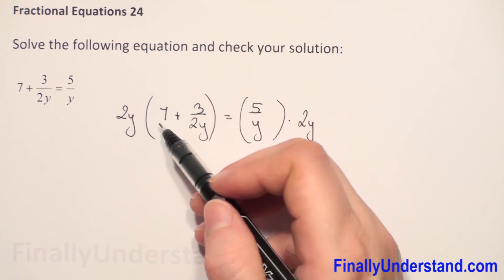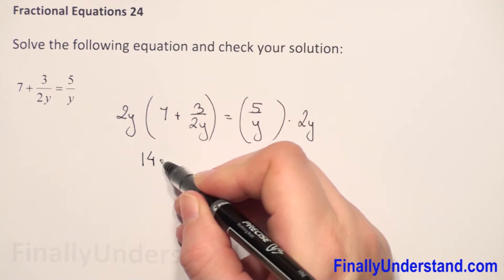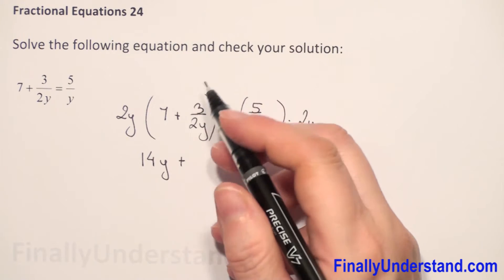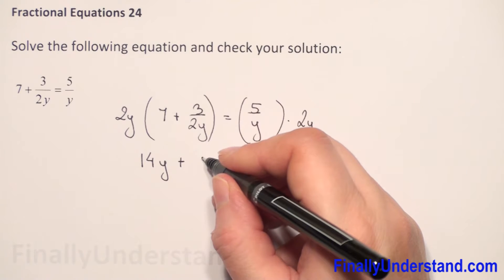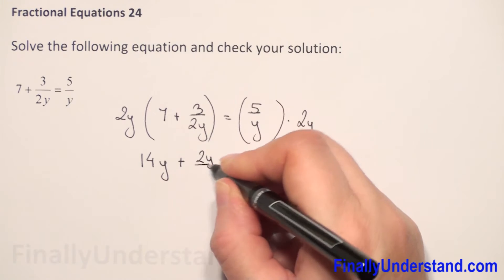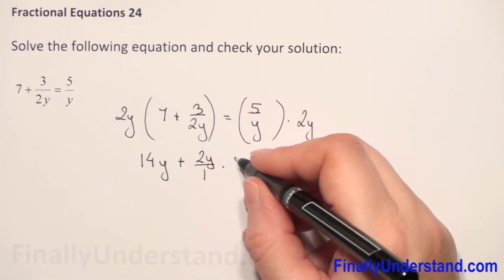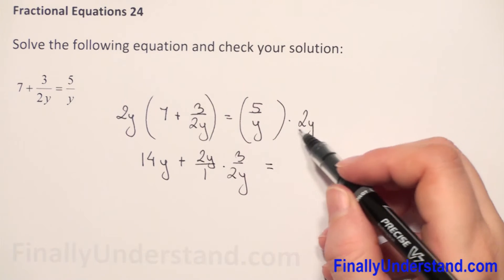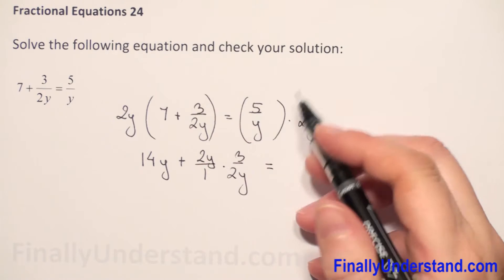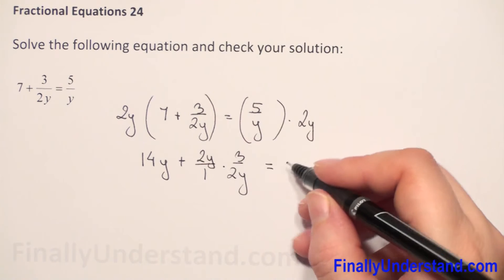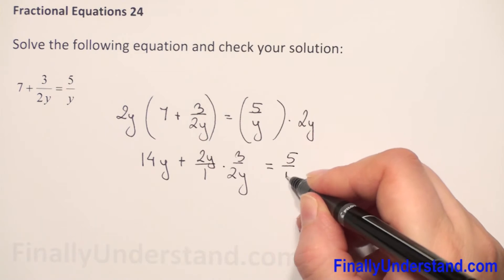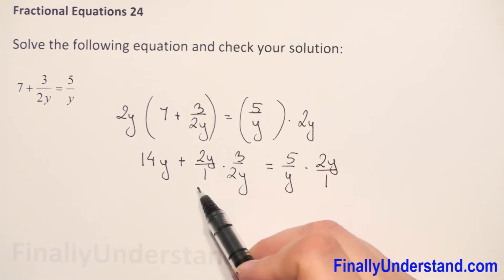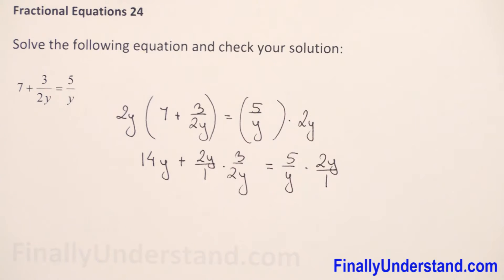So now we have 2y times 7, which will be 14y, and we have 2y times this whole fraction. So 2y I can write over 1, and we have times 3 over 2y. This is equal on the right side, where we also have a fraction — 2y over 1. So we will have multiplication of fractions.